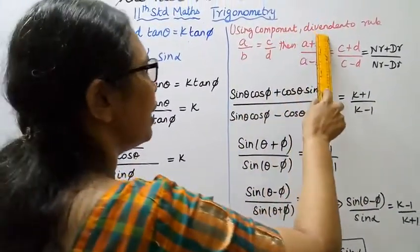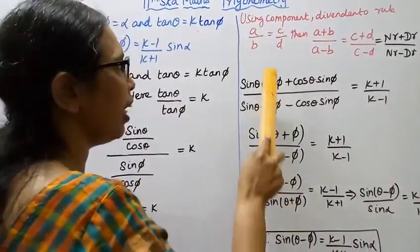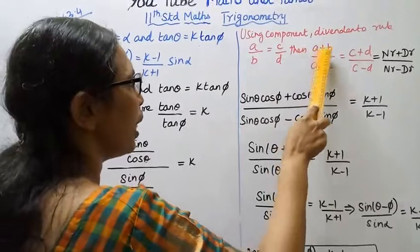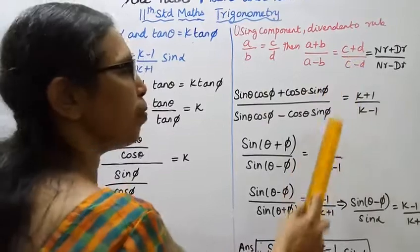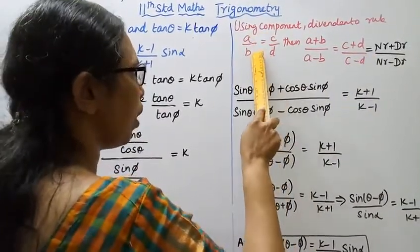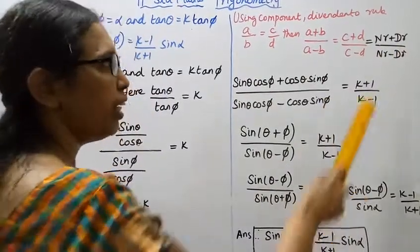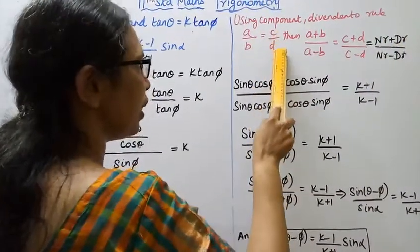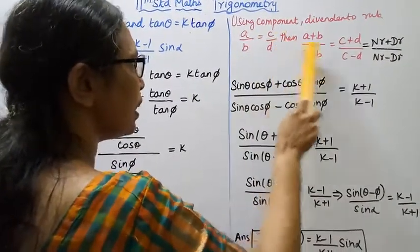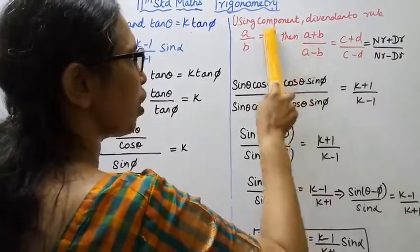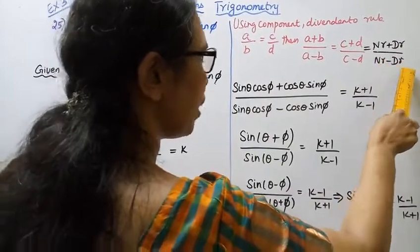Using the componendo and dividendo rule: if a by b equal to c by d, then a plus b by a minus b equal to c plus d by c minus d. That is, numerator plus denominator divided by numerator minus denominator. This is the componendo and dividendo rule.